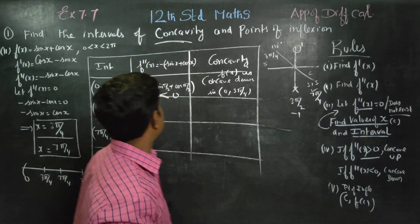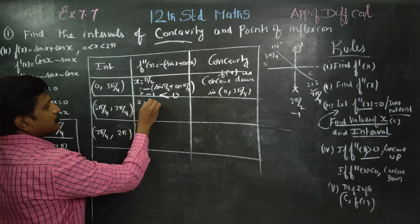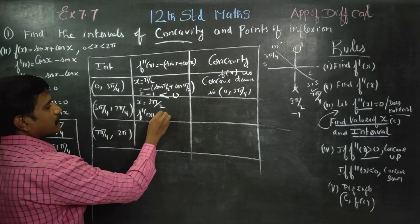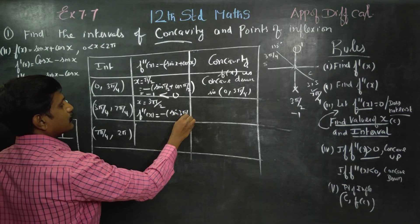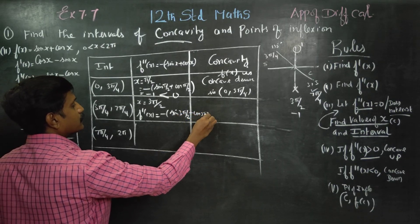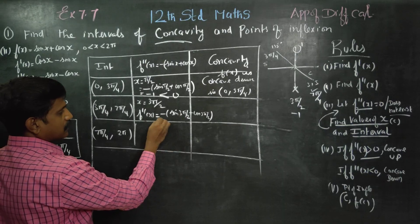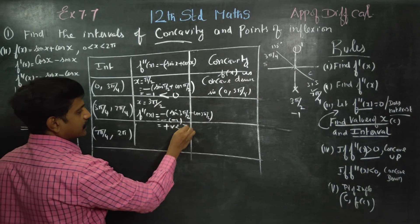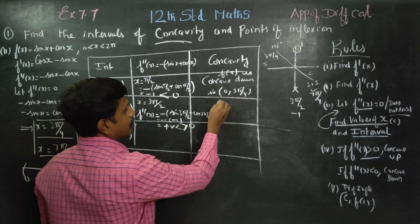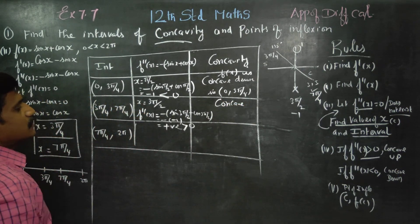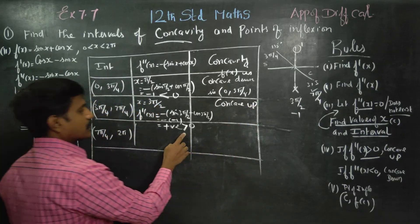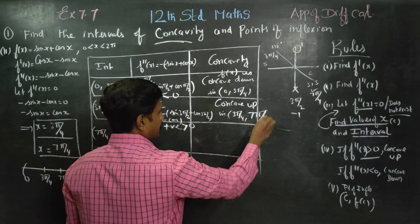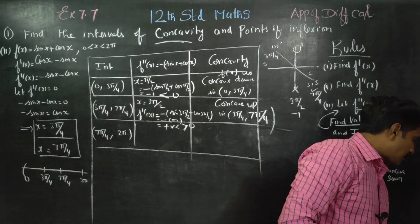For the interval 3 pi by 4 to 7 pi by 4, we use x equal to 3 pi by 2 (270 degrees). f double dash x equals minus sin(3 pi by 2) plus cos(3 pi by 2). Sin(3 pi by 2) is minus 1, so the answer is positive — greater than 0. Therefore f of x is concave up in the interval (3 pi by 4, 7 pi by 4).